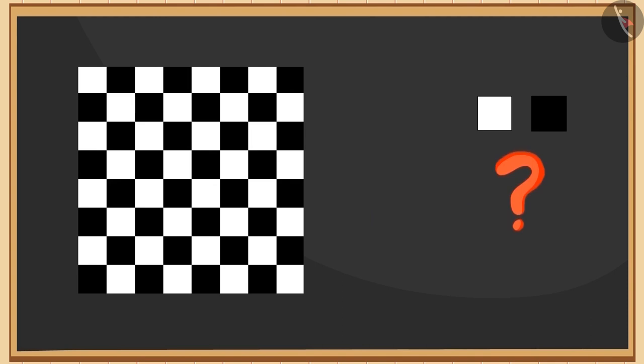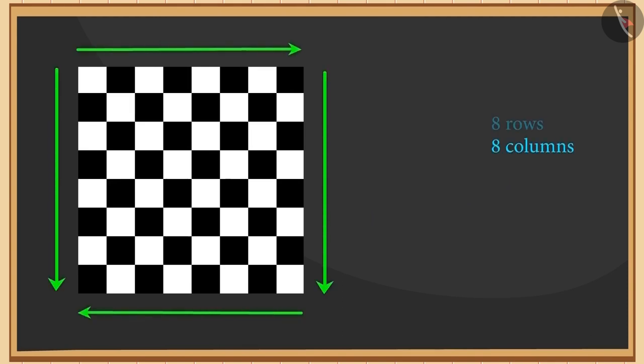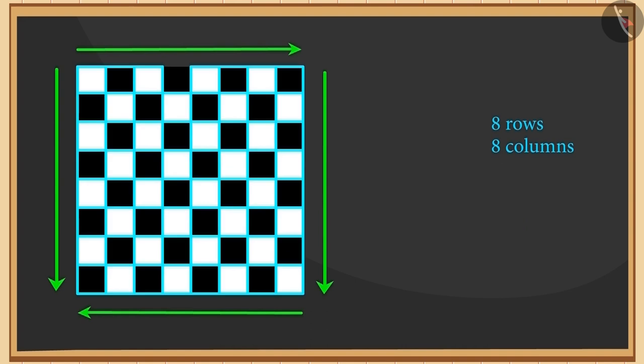Now look at this chessboard. How many black and white squares does it have? Yes, you are right. It has eight rows of eight squares each.